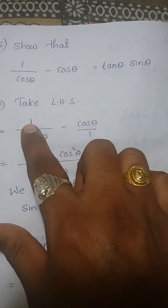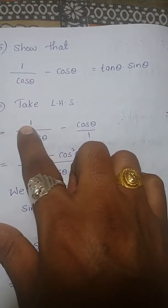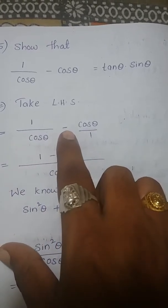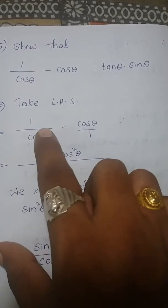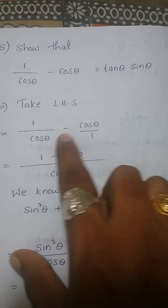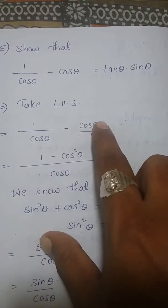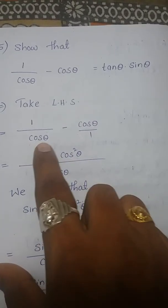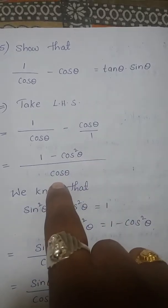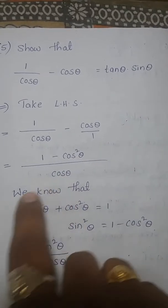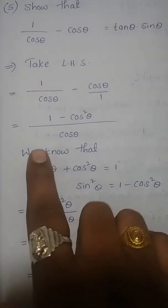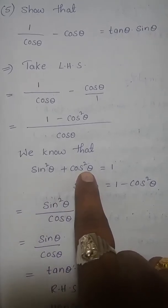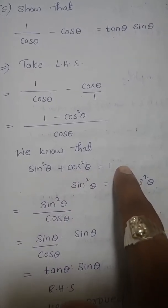Now we do cross multiplication: 1 × 1 is nothing but 1, minus — cos θ × cosθ is nothing but cos²θ. In the denominator we write cosθ × 1, which is nothing but cosθ. So we know that sin²θ + cos²θ = 1.